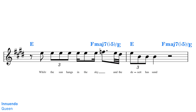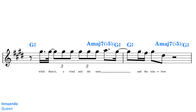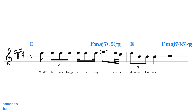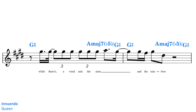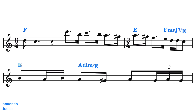The verse of Innuendo by Queen pivots between E Phrygian Dominant and G-sharp Phrygian Dominant, lending the song its dark, exotic sound. We also hear the Phrygian Dominant scale at work in Innuendo's middle flamenco section.